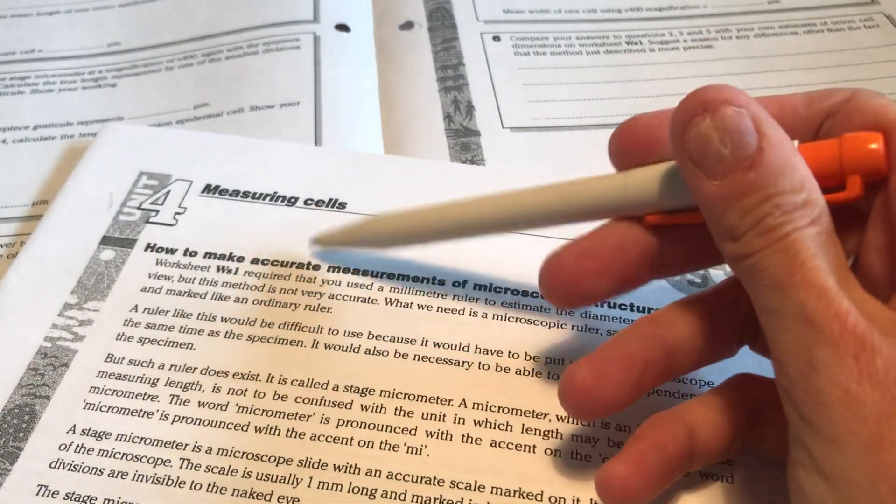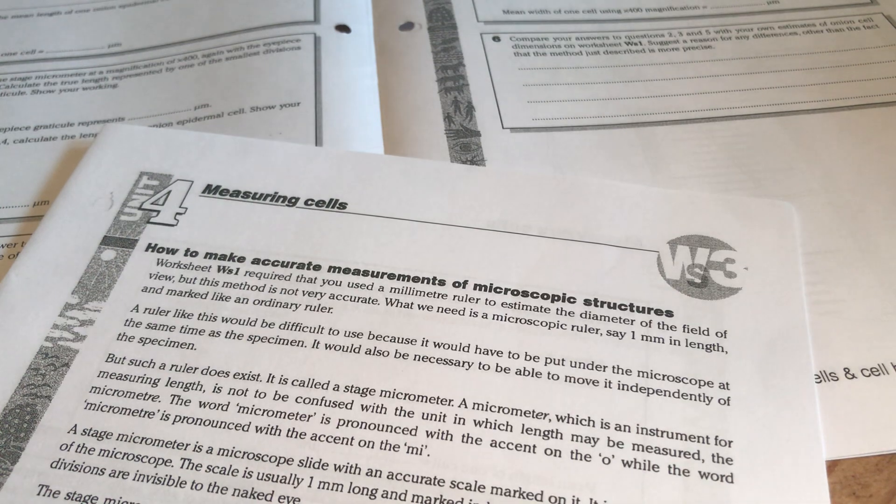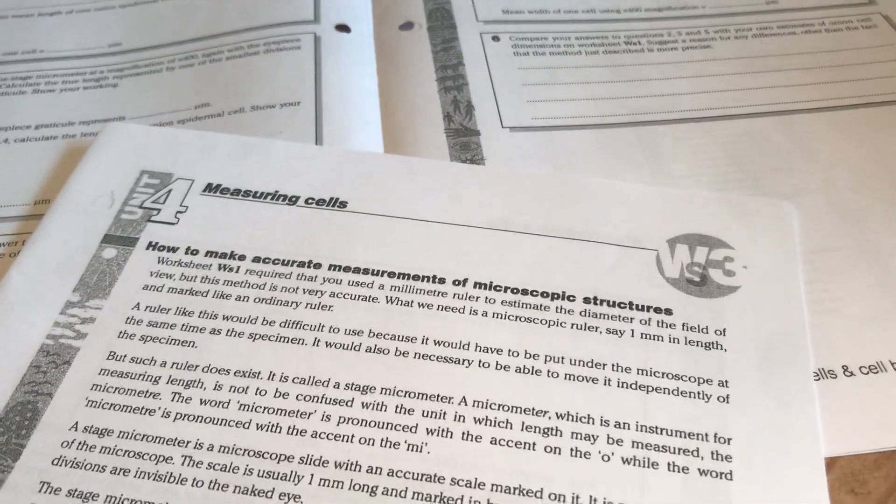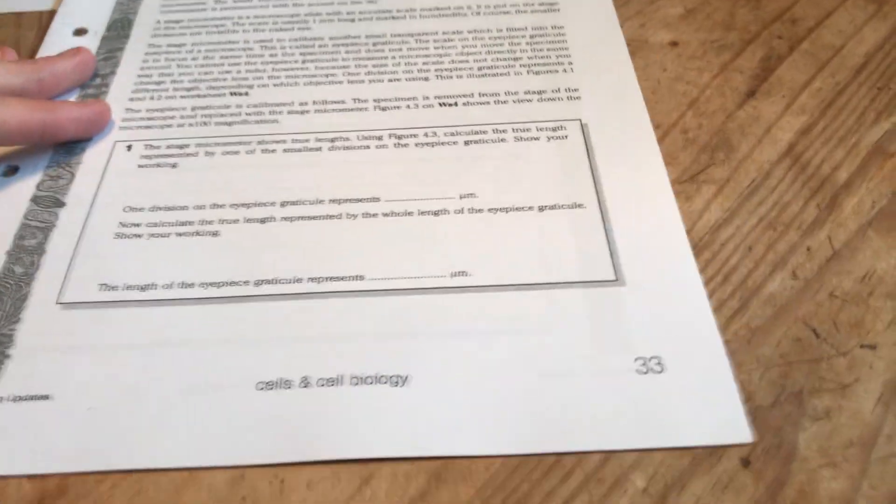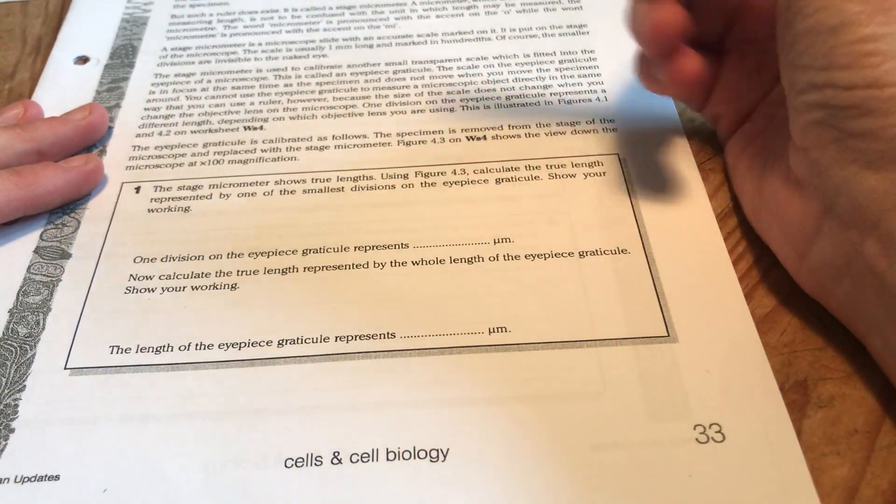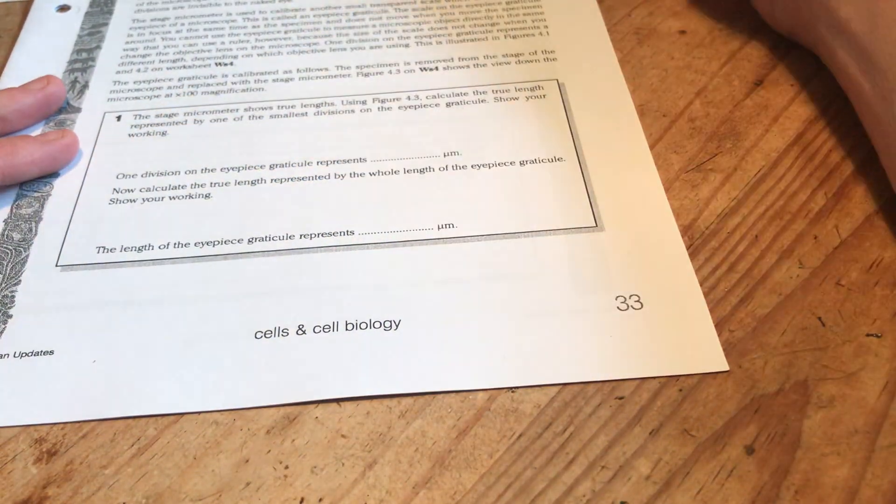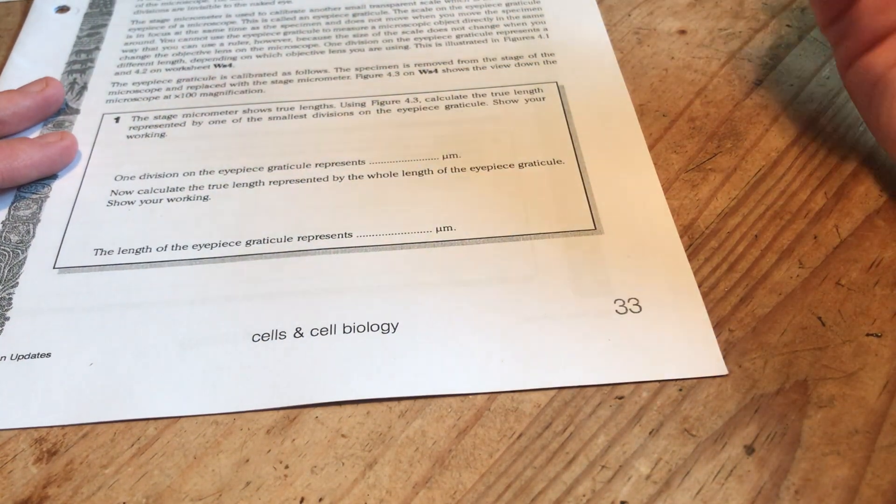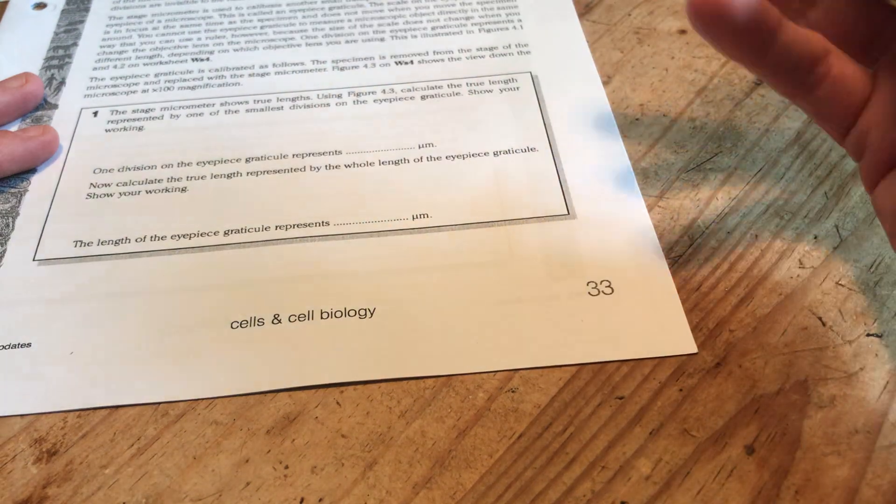This is a little video to take you through how to complete the measuring cells worksheet about using stage micrometers and eyepiece graticules. So if you want a spare copy of the sheet just print one out off the task. You've got some notes here explaining how stage micrometers and eyepiece graticules work and you've got them in your lab book as well.